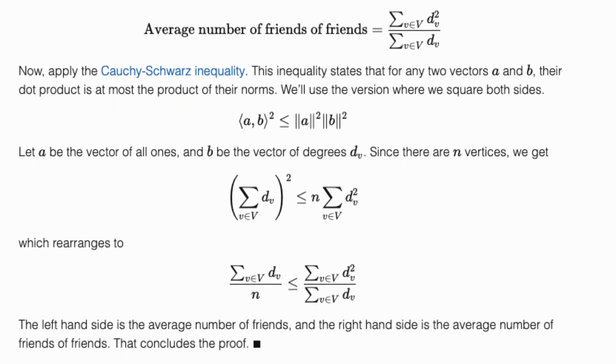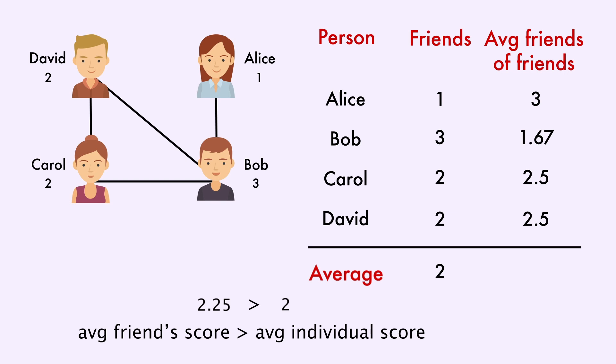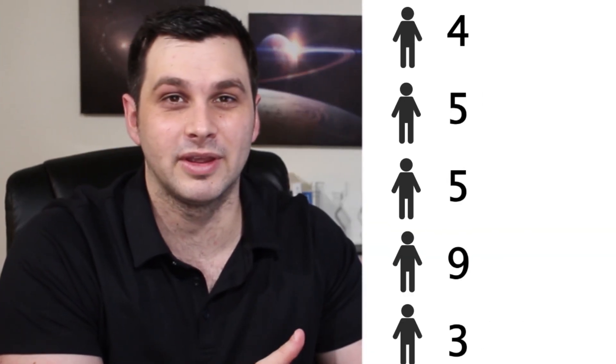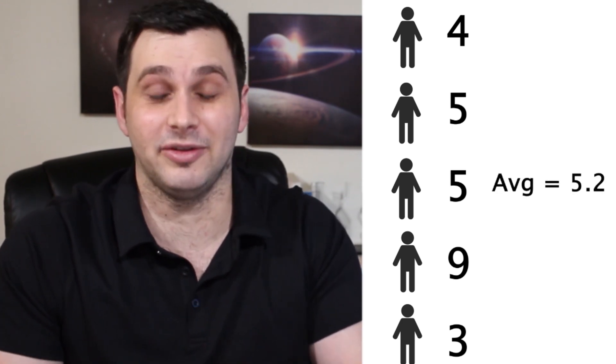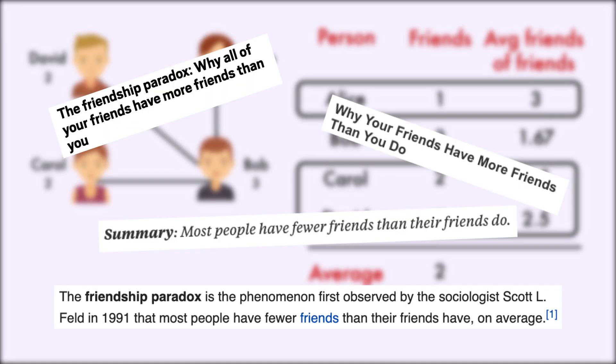I waited until this part of the video to say this, because I wanted you to see how the friendship paradox works according to most resources you'll find online, along with all of those applications, without me having to say, well, technically this isn't necessarily true. The friendship paradox, as proved by the math you see in almost any source online, states that the average friend is more popular or just as popular as the average individual — that is true, it's what I showed earlier, and it's been proven. But I said in the beginning that for most people, or more than half of you, the average of your friends' scores will be higher than yours — and that phrasing isn't necessarily true.